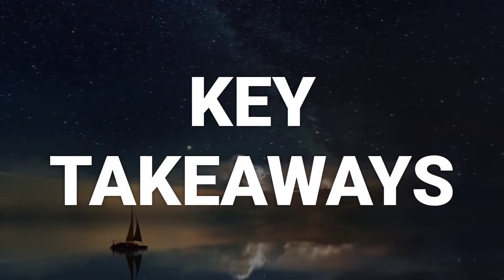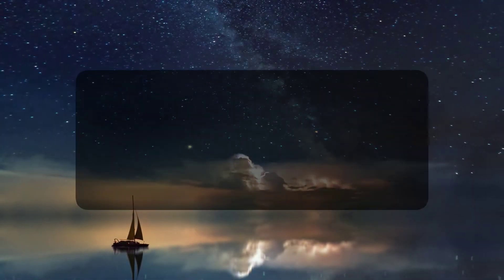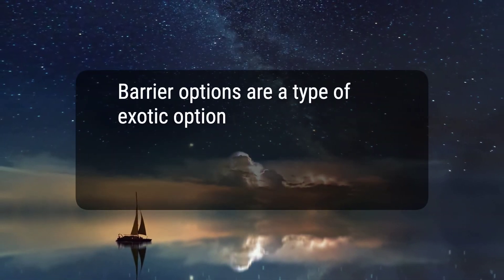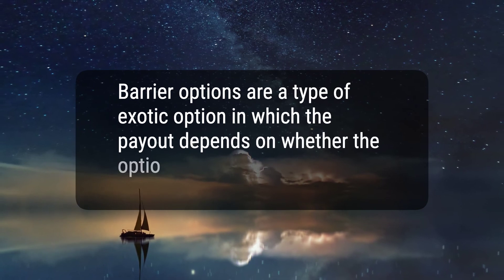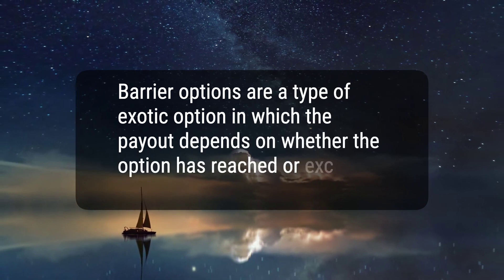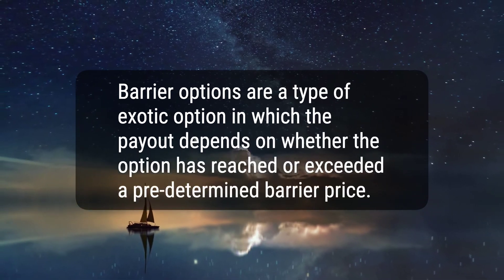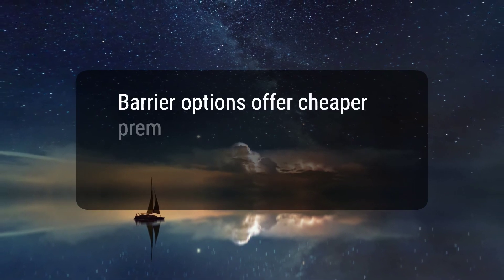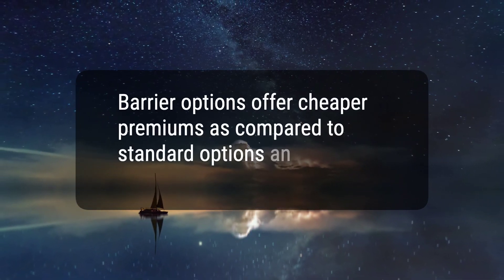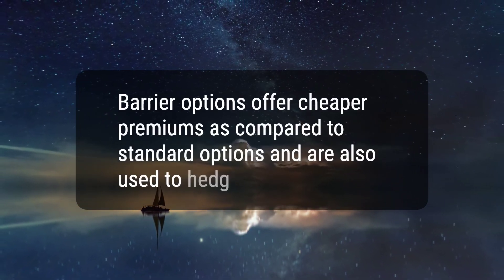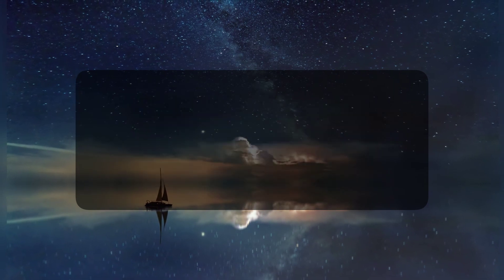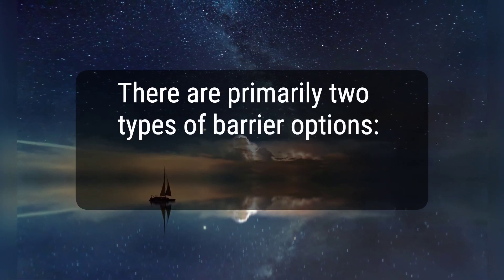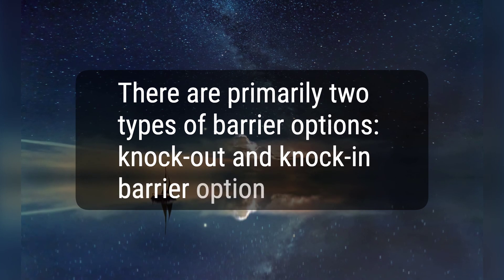Here are three key takeaways. 1. Barrier options are a type of exotic option in which the payout depends on whether the option has reached or exceeded a predetermined barrier price. 2. Barrier options offer cheaper premiums as compared to standard options and are also used to hedge positions. 3. There are primarily two types of barrier options: knockout and knock-in barrier options.